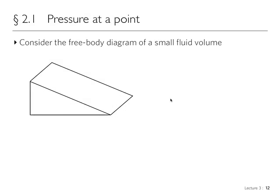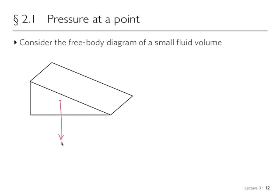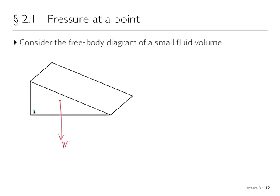Consider the free body diagram of a small fluid volume that has the shape of a wedge. We're going to have pressure forces acting on every single one of these walls, and we're also going to have the weight of this fluid. Let's set up our axes here.